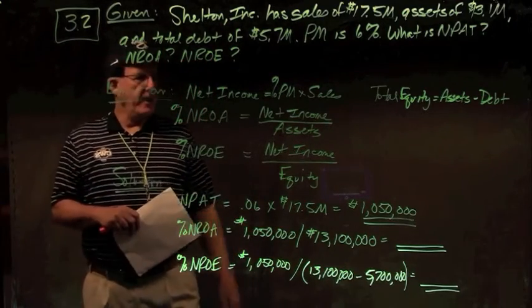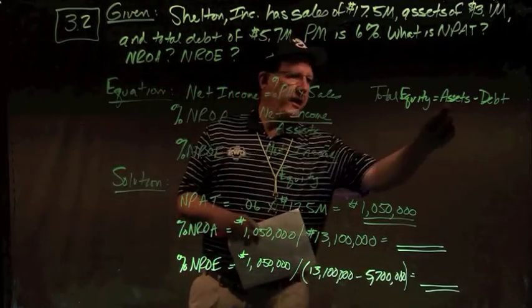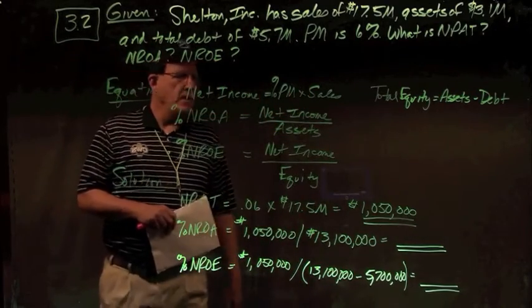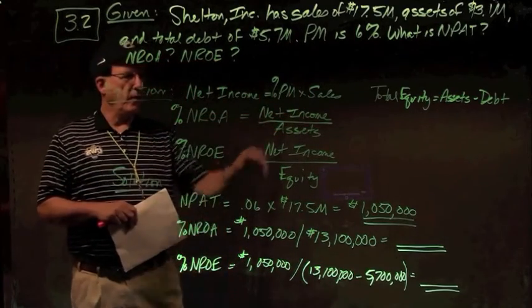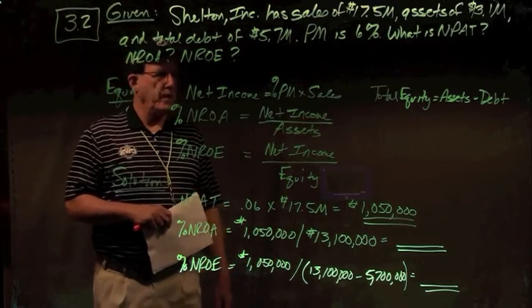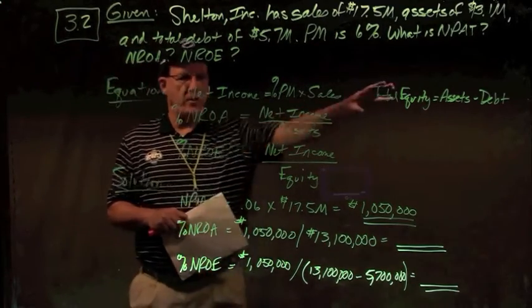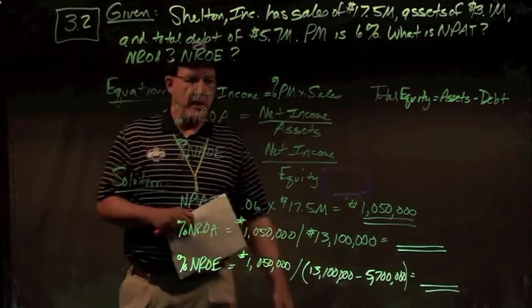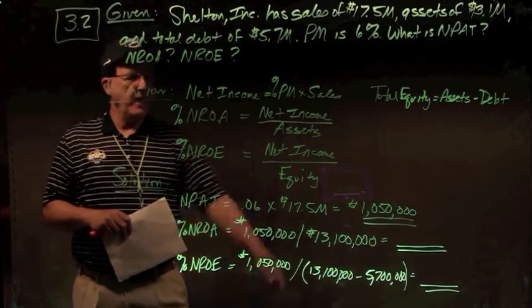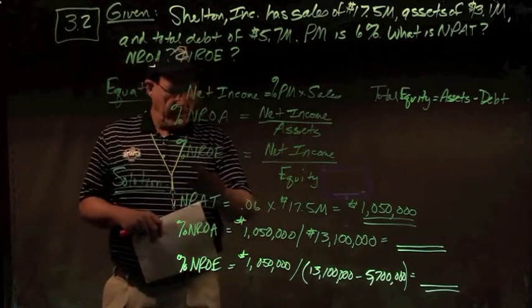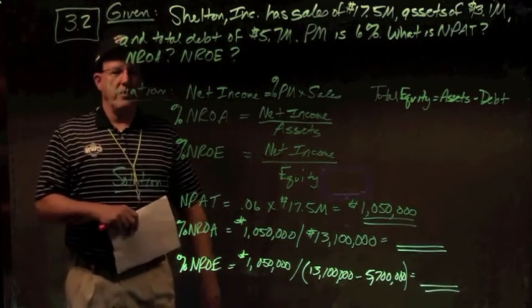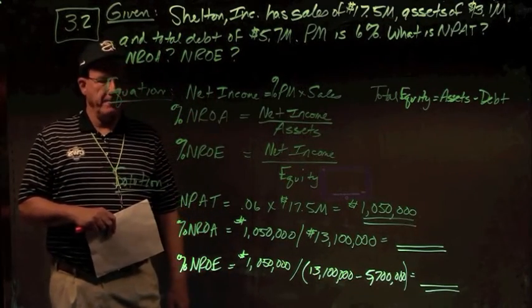We also need the balance sheet equation: equity equals assets minus debt — transforming total liabilities plus equity equals total assets, just moving that to the other side to get our equity number. Then net return on assets is net income over assets, and net return on equity is net income over equity — net return on anything being net income over anything.